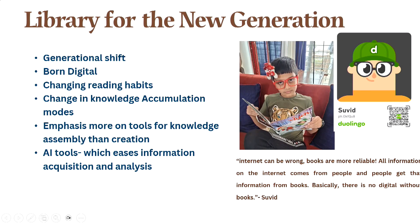But he's been smart. He said that sometimes the internet can be wrong — there is fake news, false information. Books are more reliable than the internet. He also said that all the information from the internet comes from people, and people get that from books. In that way, the traditional mode of information and knowledge still has a place, until we completely become AI-driven.